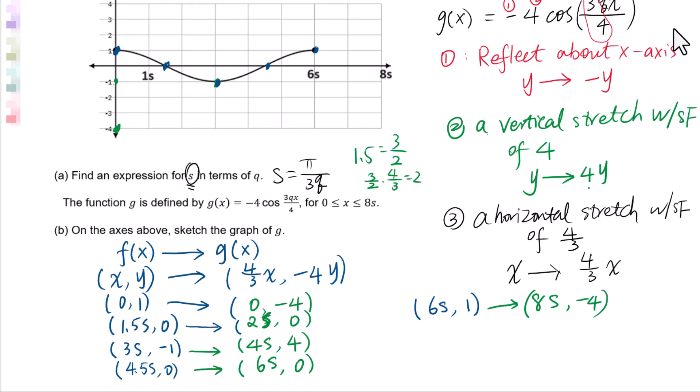(0, -4) is here. (2s, 0) here. (4s, 4). Then (6s, 0). (8s, -4) is here. Then we connect these 5 points. This is the graph for g(x).